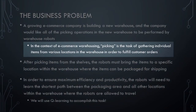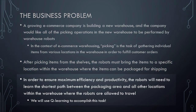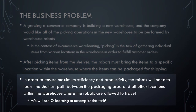In the context of e-commerce warehousing, picking is the task of gathering individual items from various locations in the warehouse in order to fulfill customer orders. After picking items from the shelves, the company would like the robots to bring the items to a specific location within the warehouse where the items can be packaged for shipping. The robots will need to learn the shortest path between the packaging area and all other locations, and our goal is to use Q-learning to accomplish this task.